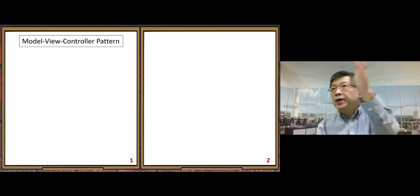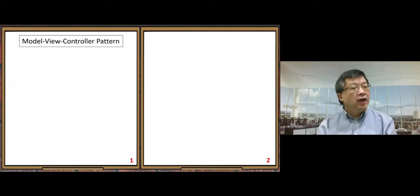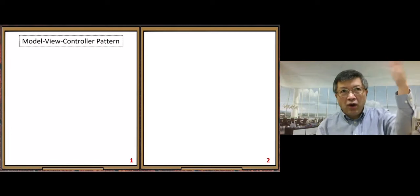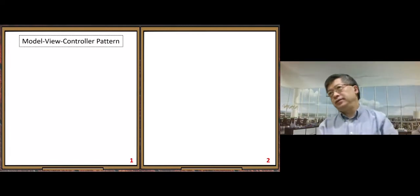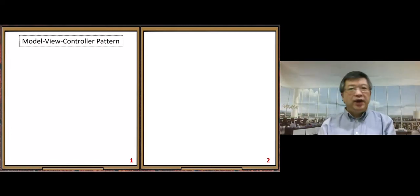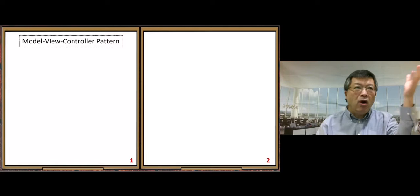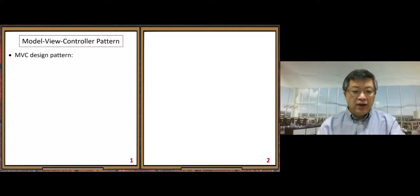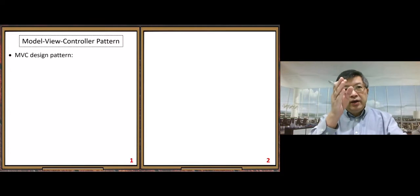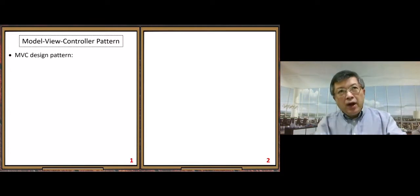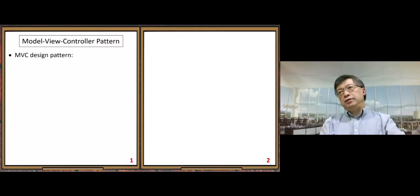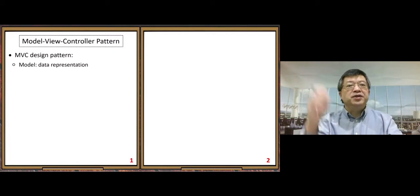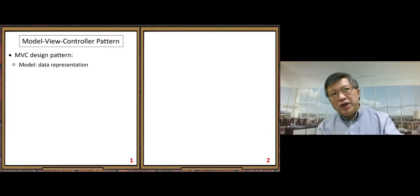In module one we covered design patterns like Service Locator and Dependency Injection. Here we learn another one: Model-View-Controller. The first component is the Model — its meaning is data representation in a project.